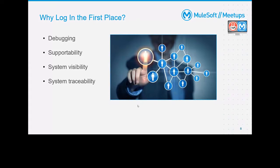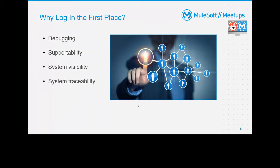If your application is running in production, you need to debug it. If you log your payloads, log your connectors, and track where the Mule event is at each point of the flow, then you can debug it. Otherwise, you won't be able to see what is wrong with your application.